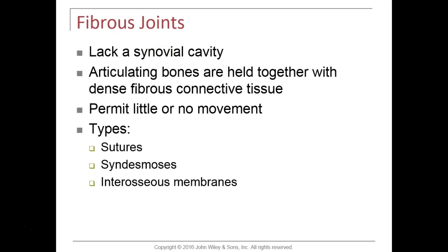Fibrous joints do not have synovial cavities. The three types of fibrous joints we'll cover have no synovial or joint cavity. The articulating bones are held together by a dense sheet of fibrous connective tissue, and they may allow a little bit of movement or no movement at all. So fibrous joints can be synarthrotic or amphiarthrotic joints.